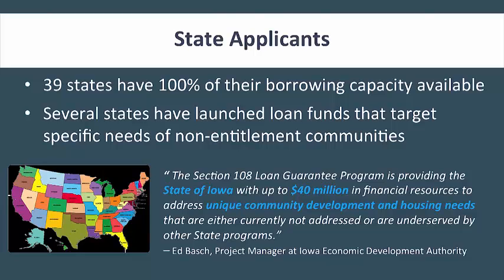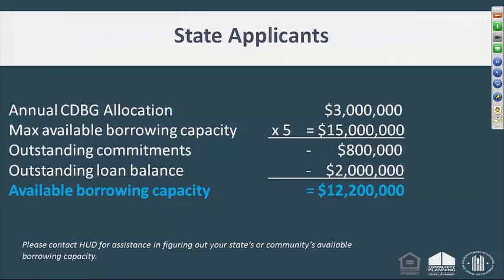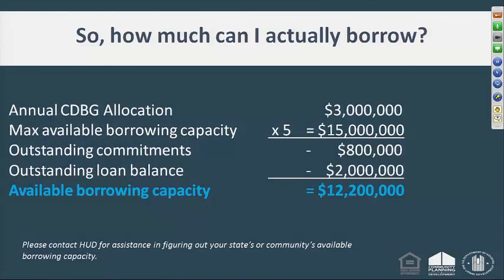States that apply for 108 financing primarily use the monies for a loan fund to target specific needs of non-entitlement communities, such as the state of Iowa. Here's an example of how much you can borrow: if a community receives $3 million in annual CDBG allocation, the maximum borrowing capacity is five times that, or $15 million. From that amount, subtract outstanding 108 loan commitments of $800,000 and outstanding loan balance of $2 million, leaving available borrowing capacity of $12.2 million.